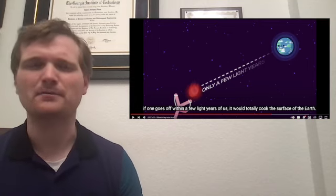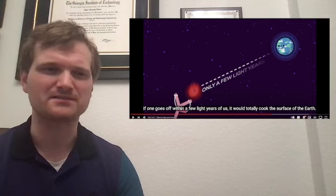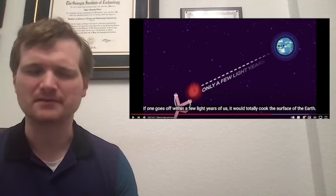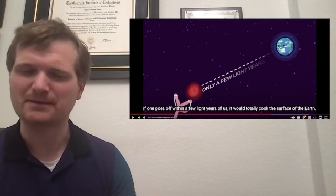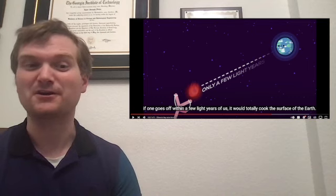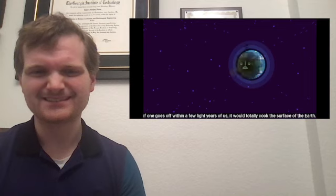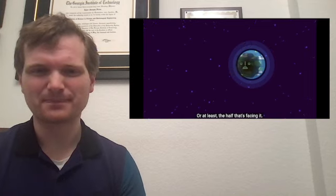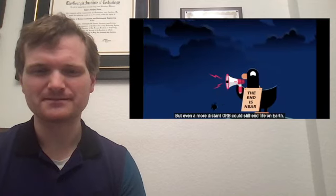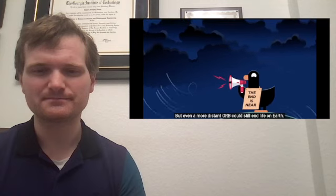Such as cesium-137. That one you can just study in a little lab. But nah, this thing's coming at you hard. Within a few light years of us, it would totally cook the surface of the Earth. Or at least, the half that's facing it. But even a more distant GRB could still end life on Earth.